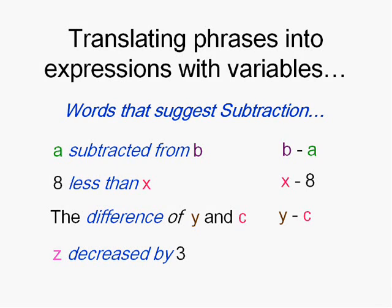Finally, a little more obvious. Decreased by is another one for subtraction. Seven decreased by three. z decreased by three is z minus three.